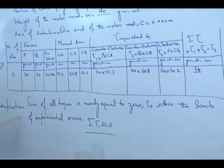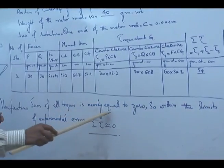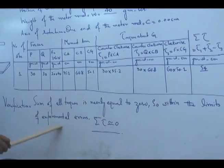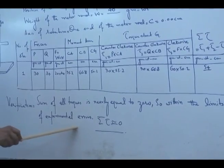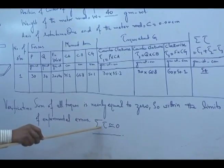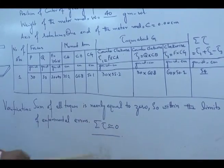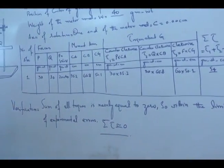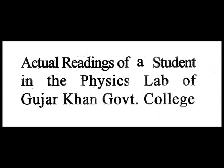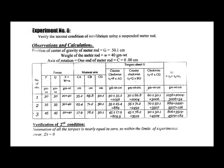In our experiment we are verifying that the sum of all torques must equal zero. Within the limits of experimental error, because sources of error are always present in practicals, their sum is nearly equal to zero. This is our fourth aspect. You can take the book 'Objective Physics Practicals' from Ilmi Book Depot, Urdu Bazaar, Lahore. Your readings may be different from these readings — check these readings as a reference. Thank you.